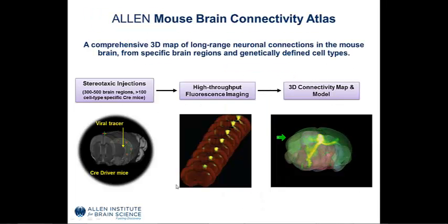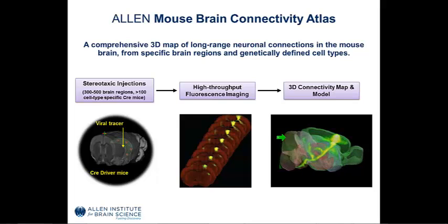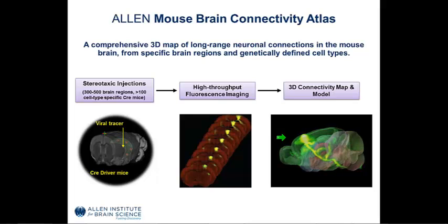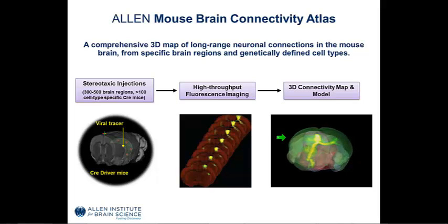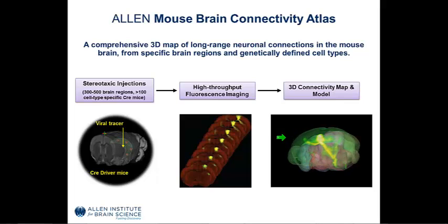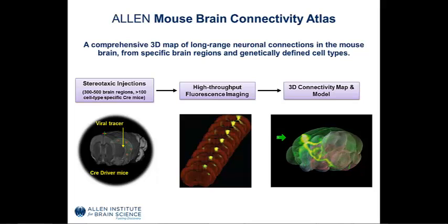The Allen Mouse Brain Connectivity Atlas maps the long-range neuronal connections in the adult mouse brain. This project includes almost 1,800 experiments in which recombinant adeno-associated virus was injected into approximately 300 brain regions. This virus had the effect of filling the infected cells with green fluorescent protein, which was then imaged through the brain in a high-throughput manner. Each experiment was processed and registered into our three-dimensional reference space and then published online for analysis.